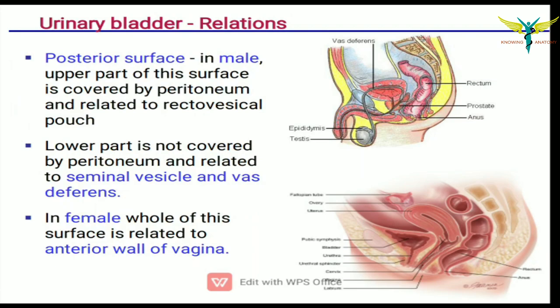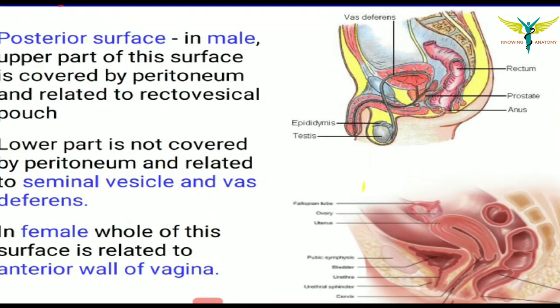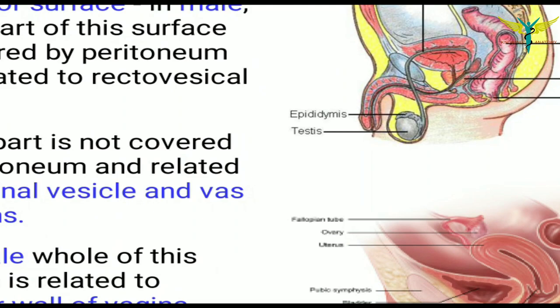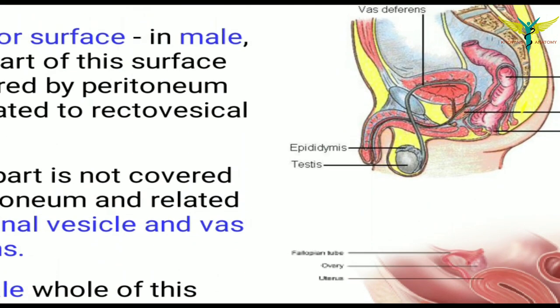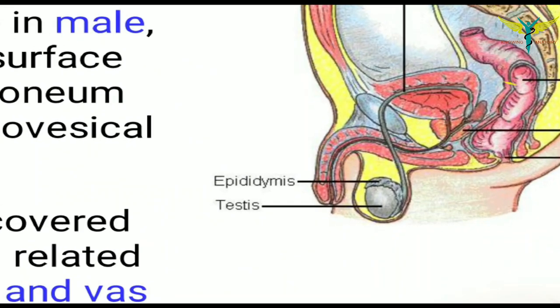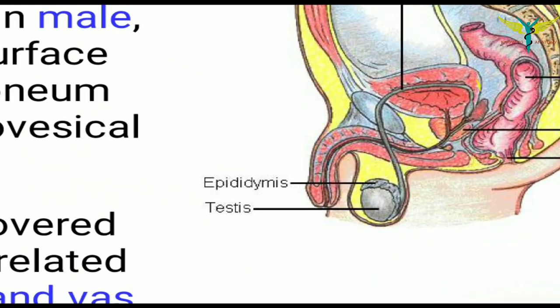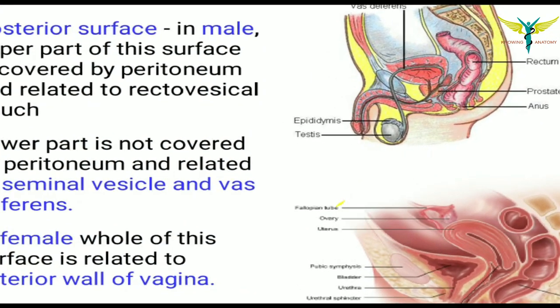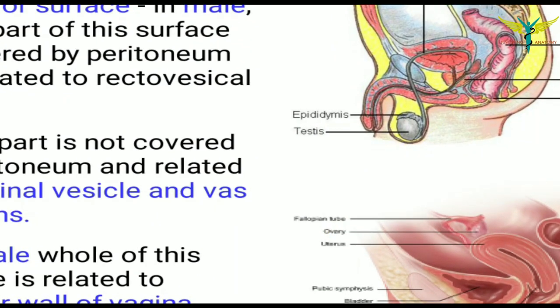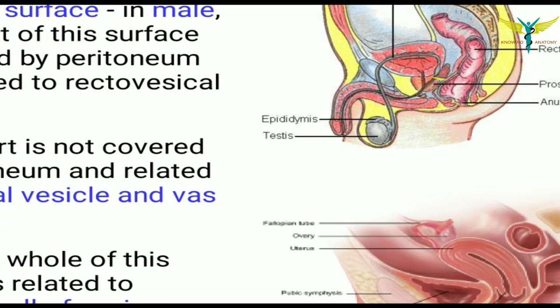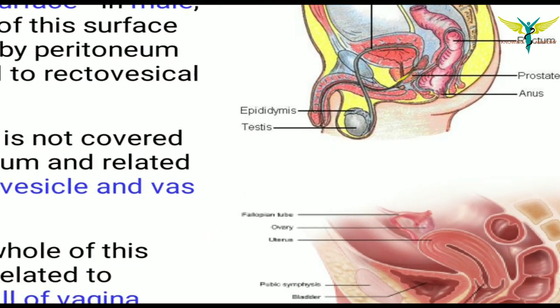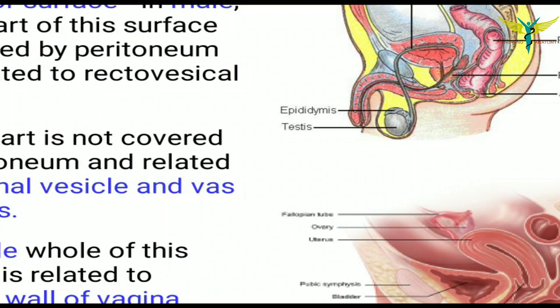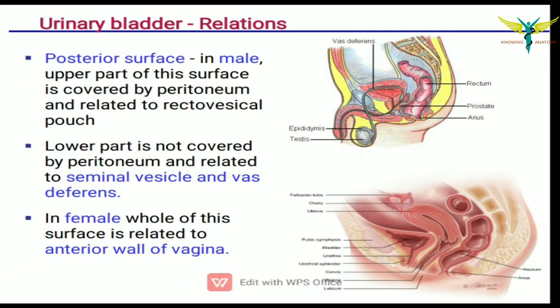Coming to the relations of the posterior surface: in males, the upper part is covered by the peritoneum and is related to the rectovesical pouch. The lower part of the urinary bladder is not covered by peritoneum and is related to the seminal vesicles and the vas deferens.